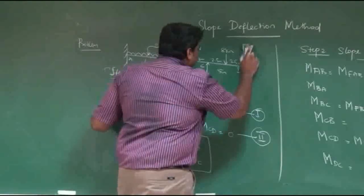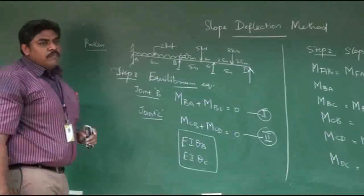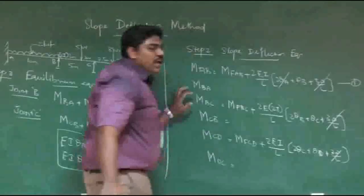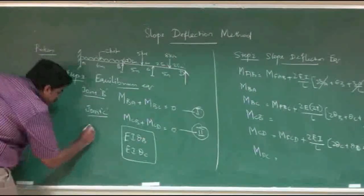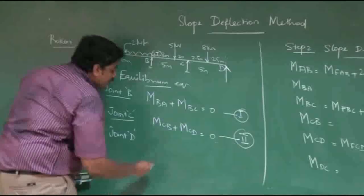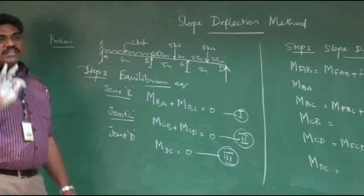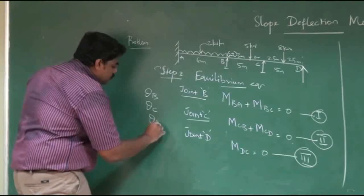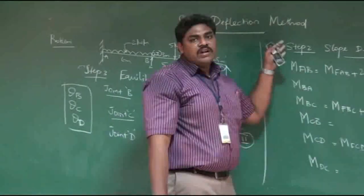One more case: if the last support D is simply supported instead of fixed, then θD will not get cancelled. This means there will be three unknowns: θB, θC, and θD. A third equilibrium equation is added at joint D: MDC = 0. With three unknowns and three equations, you can solve for all values and substitute back into step 2 to arrive at the final moments.